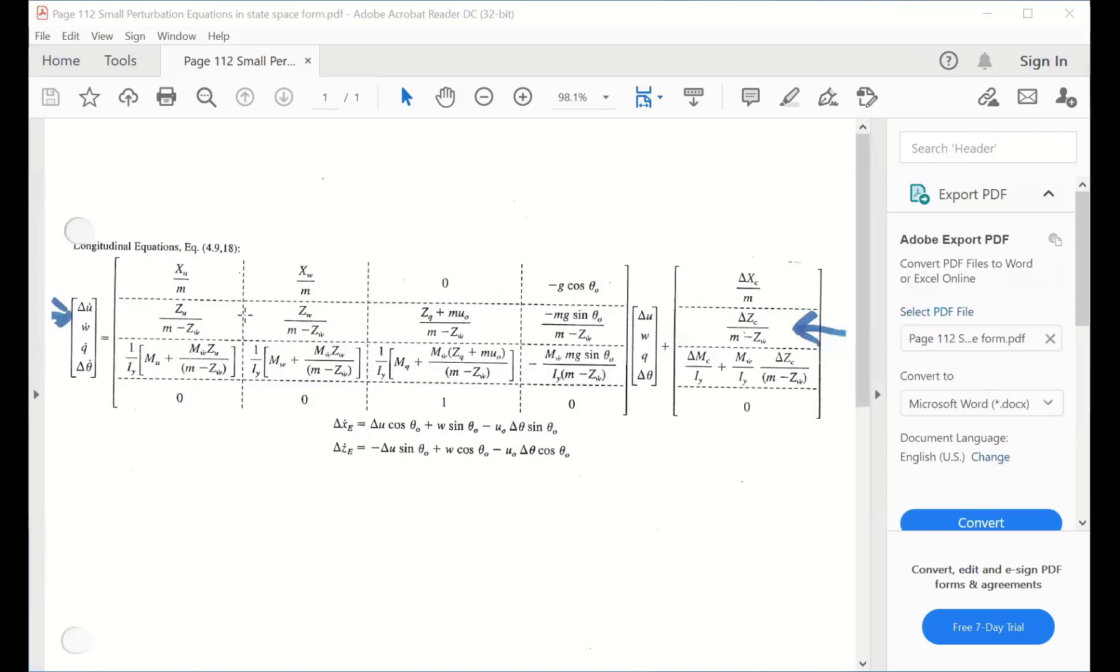So we ended up with this result where we have this vector, the state space vector: delta u, w, q, and delta theta. Those are the unknowns, the motion variables. Once we plug in all the parameters for the airplane, we just get numbers for all of this stuff here.